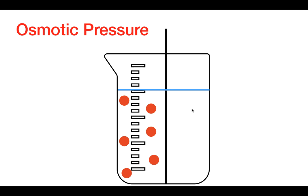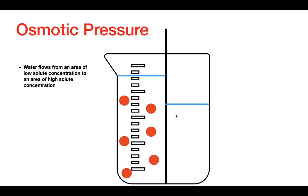What's going to happen as time goes on is that the water levels are going to change in this beaker. The water level on the low-solute side is going to decrease, and the water level on the high-solute side is going to increase, because water moves from the area of low solute concentration to the area of high solute concentration. So we can relate solute concentration to osmotic pressure.